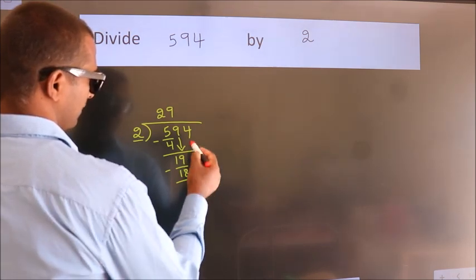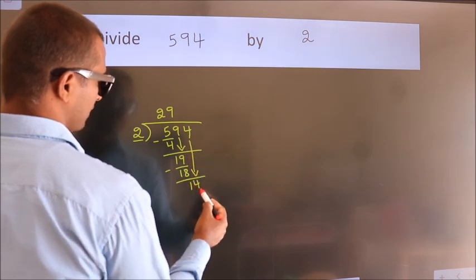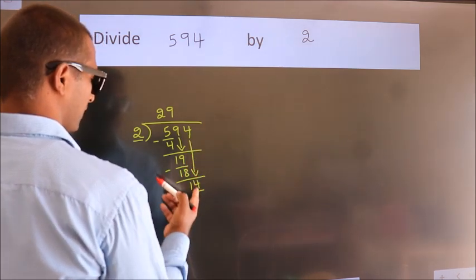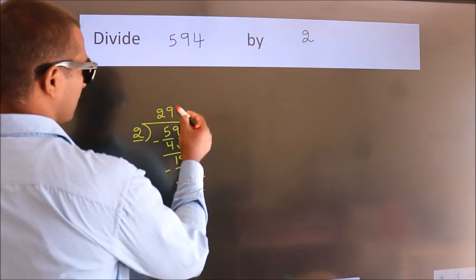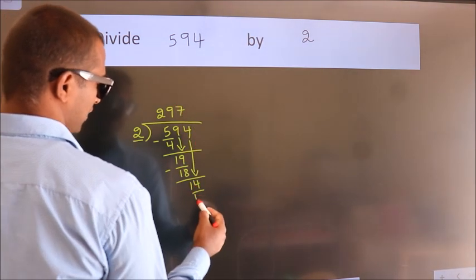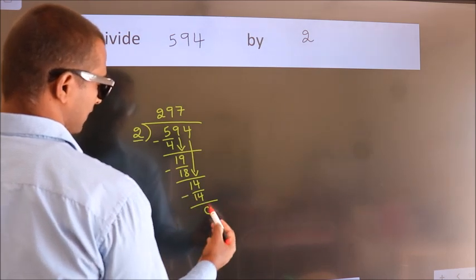After this, bring down the beside number. So 4 down, so 14. When do we get 14? In 2 table, 2 times 7 is 14. Now we subtract. We get 0.